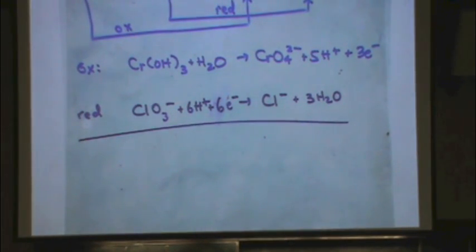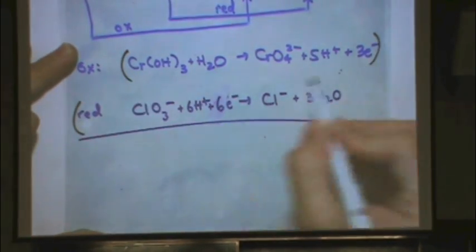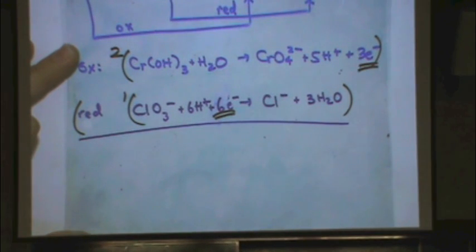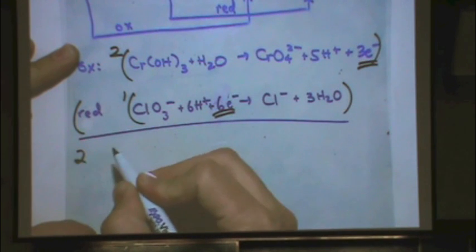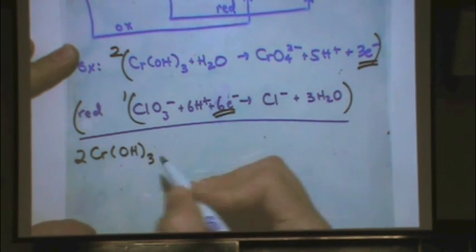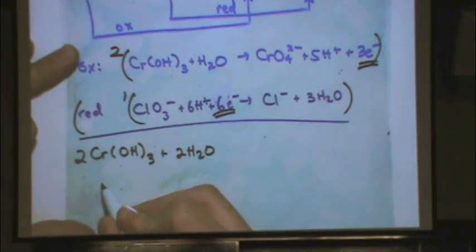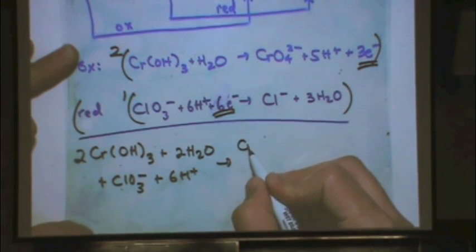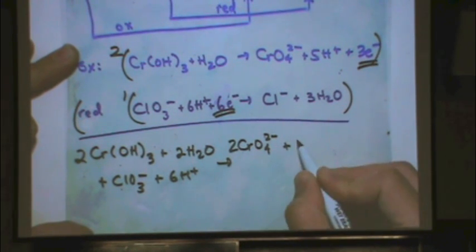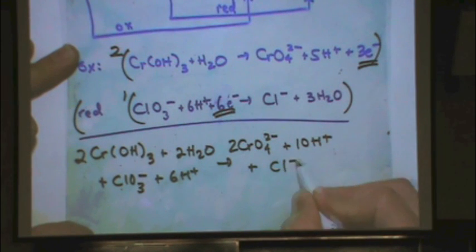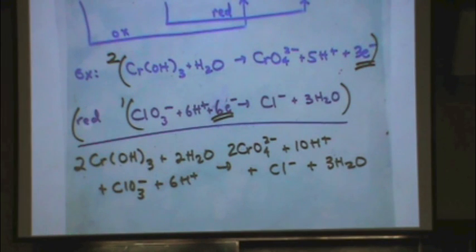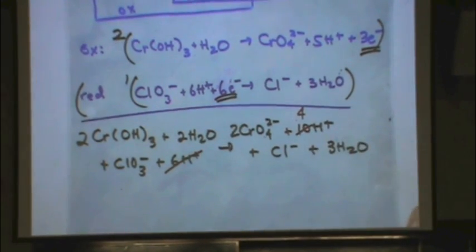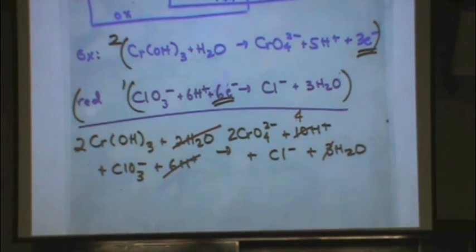Now I add the two half reactions together. Multiply the top one by 2 and the bottom by 1, giving 6 electrons that cancel. Combining all reactants: 2Cr(OH)₃ + 2H₂O + ClO₃⁻ + 6H⁺ → 2CrO₄²⁻ + 10H⁺ + Cl⁻ + 3H₂O. That's the acidic conditions answer. Now simplify: cancel 6 H⁺ to leave 4 on the right, and cancel 2 waters to leave 1 on the right.